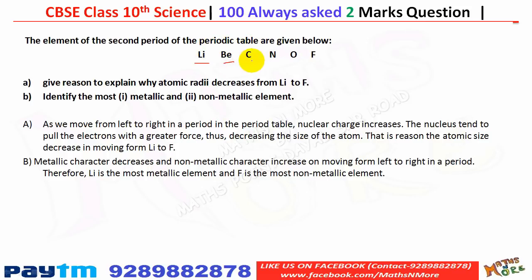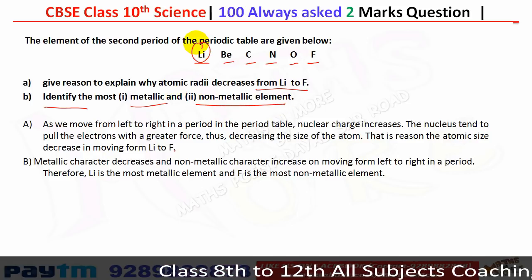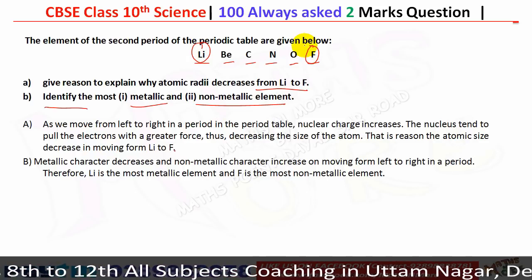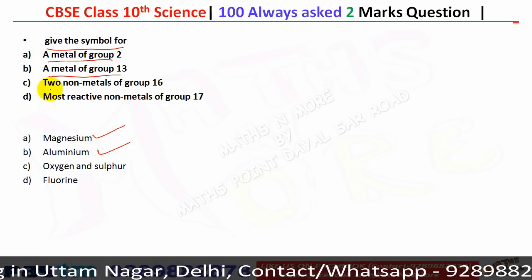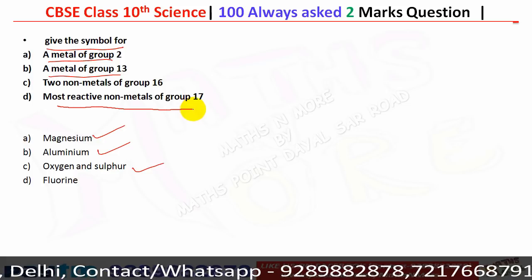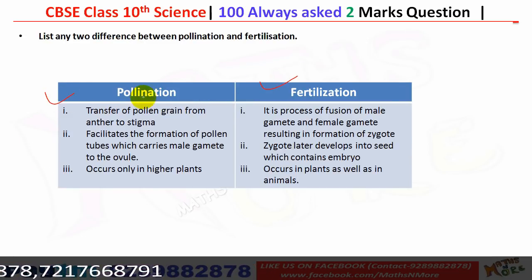For elements of the second period — Li, Be, C, N, O, F — atomic radius decreases from Li to F because as we move left to right in a period, nuclear charge increases and the nucleus pulls electrons with greater force, decreasing atomic size. Li is the most metallic element and F is the most non-metallic. Group 2 metal: Mg; Group 13 metal: Al; Group 16 non-metals: O and S; most reactive non-metal of Group 17: F.